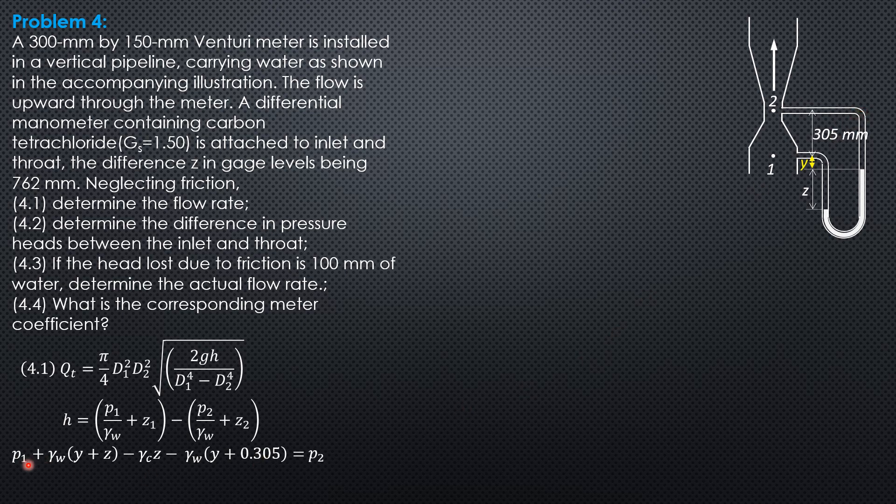So simplifying, P1 minus P2 equals specific weight of carbon tetrachloride z. And take note that gamma of water y will be canceled here. So gamma of carbon tetrachloride z plus 0.305 gamma of water and minus gamma of water z. So that's the simplification.